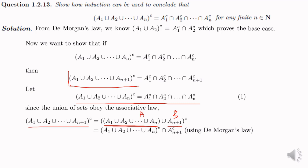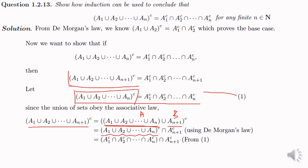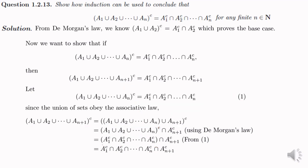From our assumption in equation (1), (A1 ∪ … ∪ An)^c can be written as A1^c ∩ A2^c ∩ … ∩ An^c. Substituting, we get A1^c ∩ A2^c ∩ … ∩ An^c ∩ A(n+1)^c. Using the associative law for sets, all these terms can be taken together. This proves our result, and hence by the principle of mathematical induction the result is true for all n element of N.